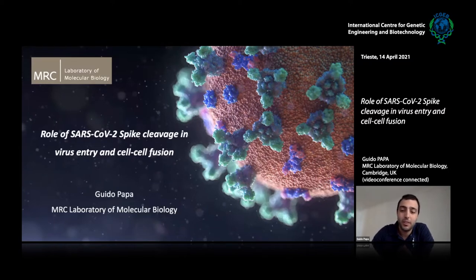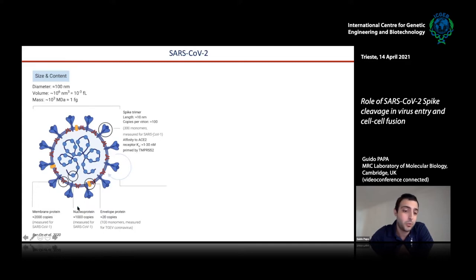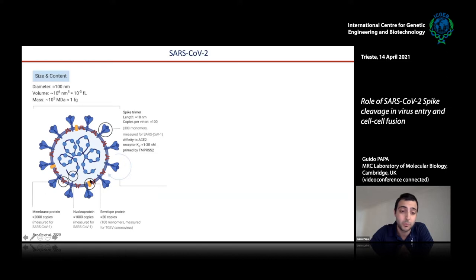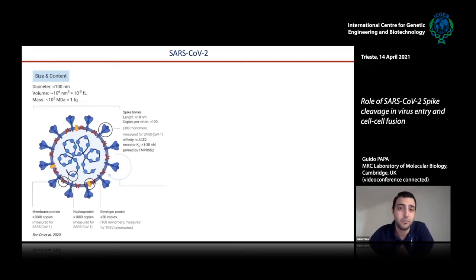Just a small introduction on SARS-CoV-2. The SARS-CoV-2 particle is an envelope virus mainly composed of four structural proteins: the nucleoprotein, which is complexed with the genome — a positive single-strand RNA — and three envelope structural proteins: the membrane protein, the envelope protein, and probably the most famous protein on earth now, the spike protein. The spike is very important for binding to the receptor and entry into the target host cell, and it is also the main target for SARS-CoV-2 vaccines.